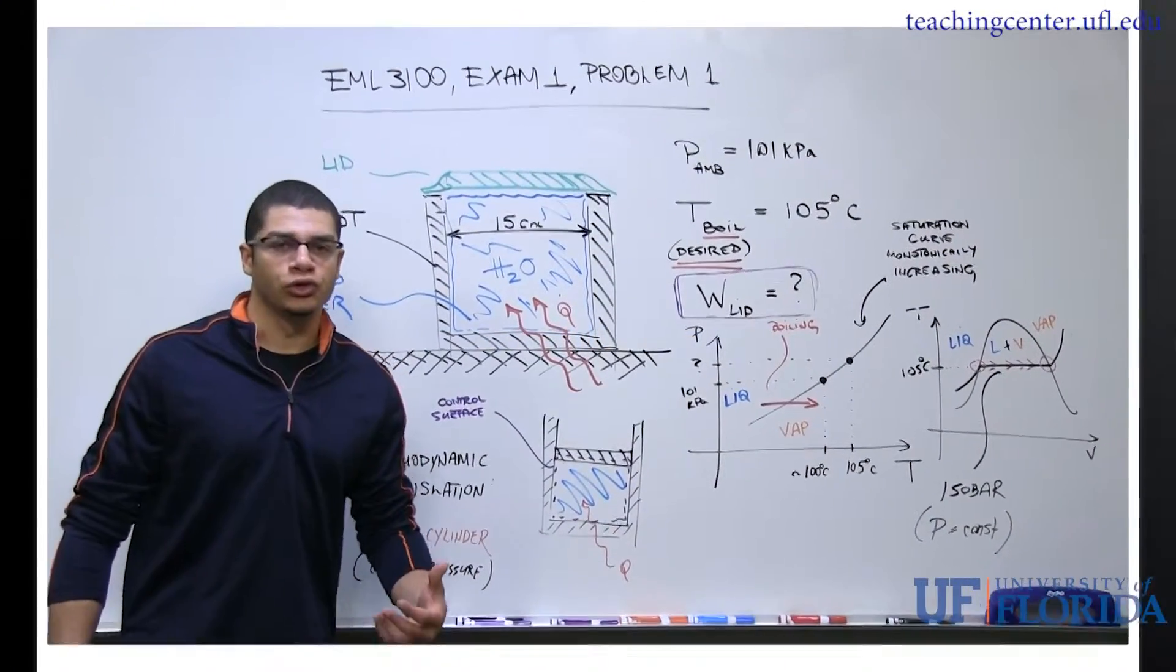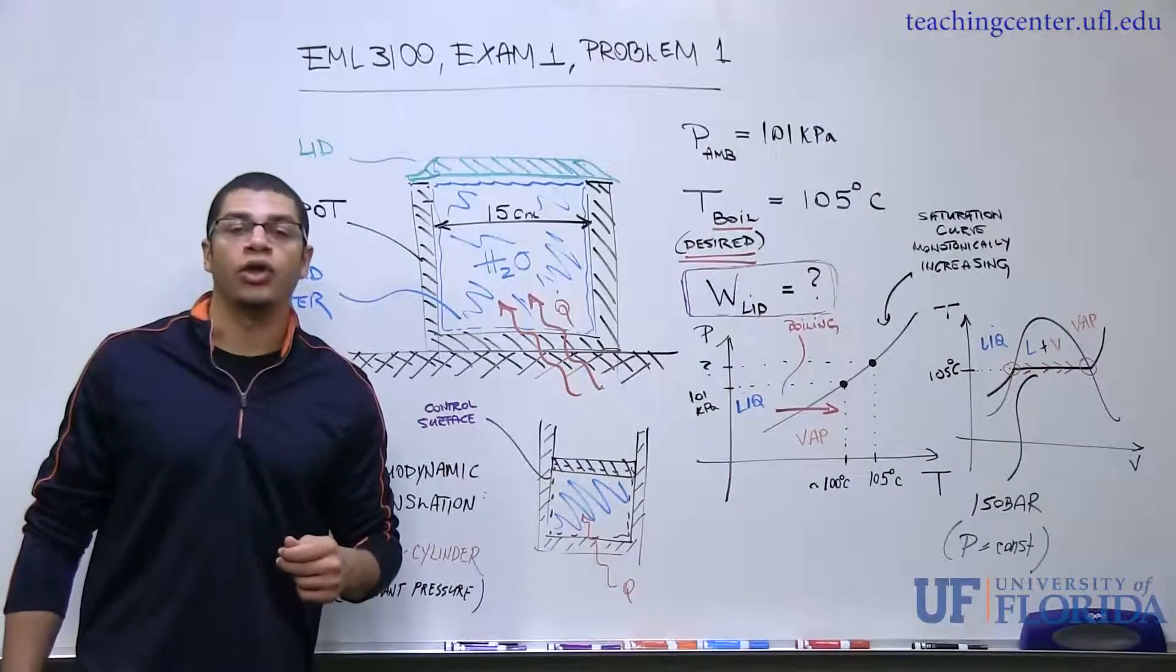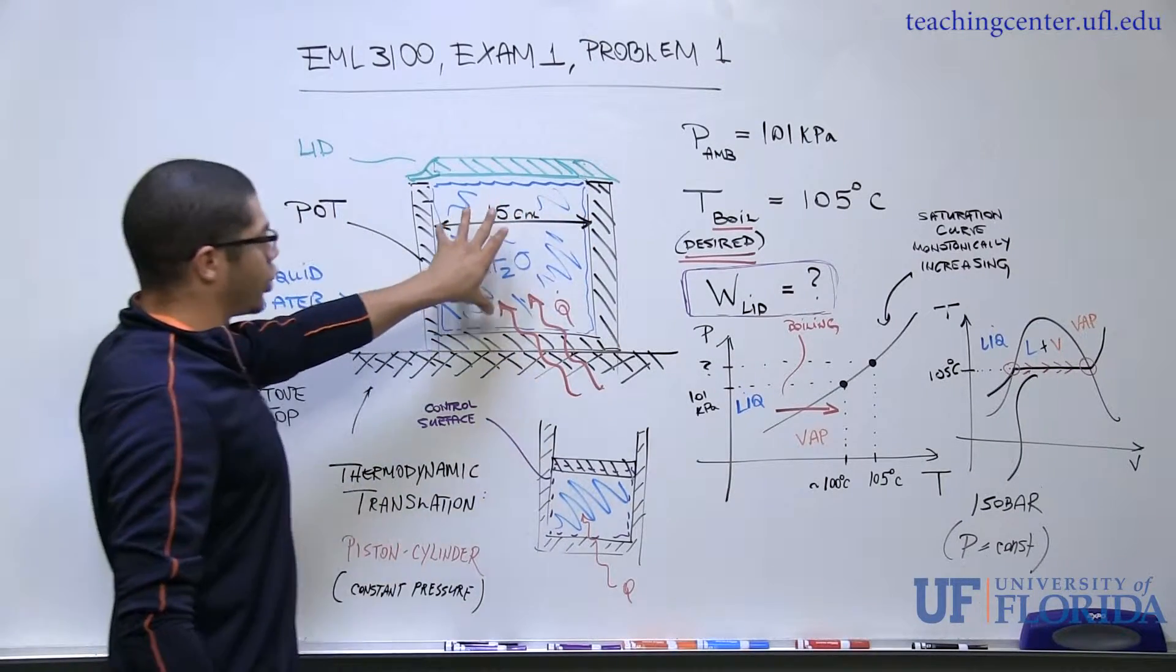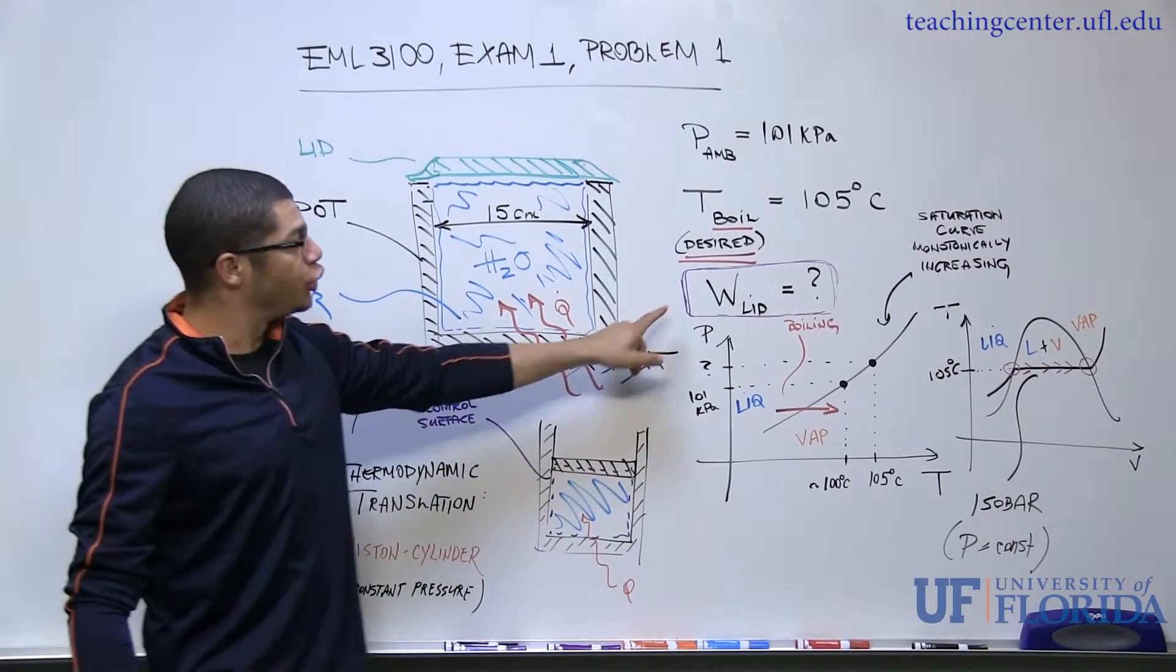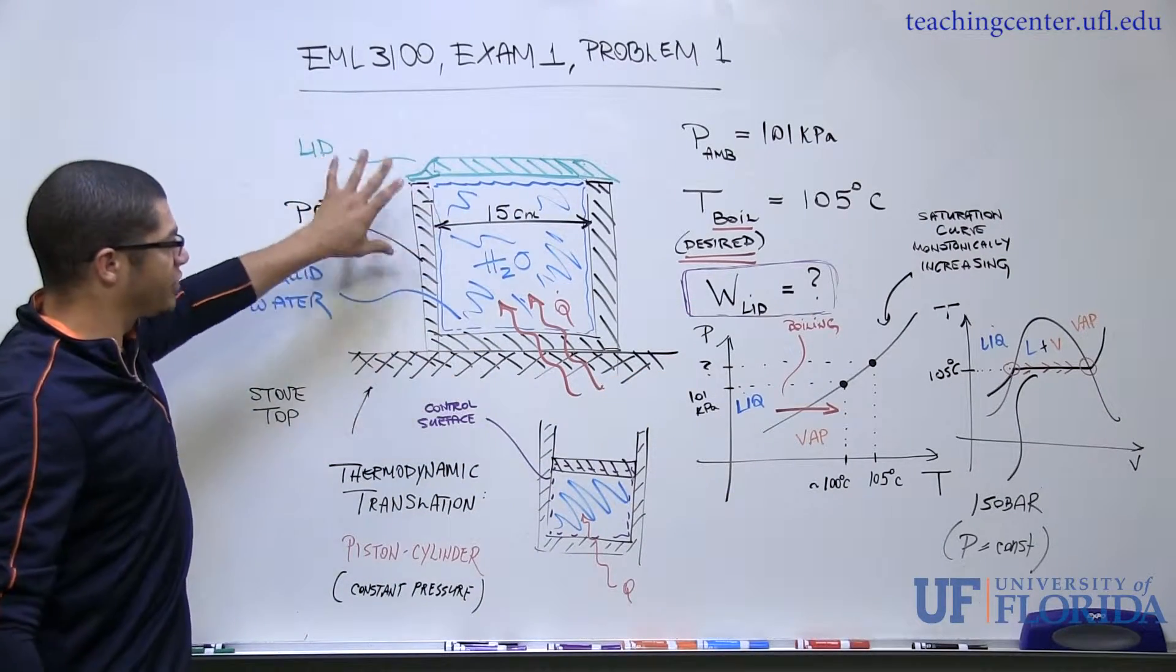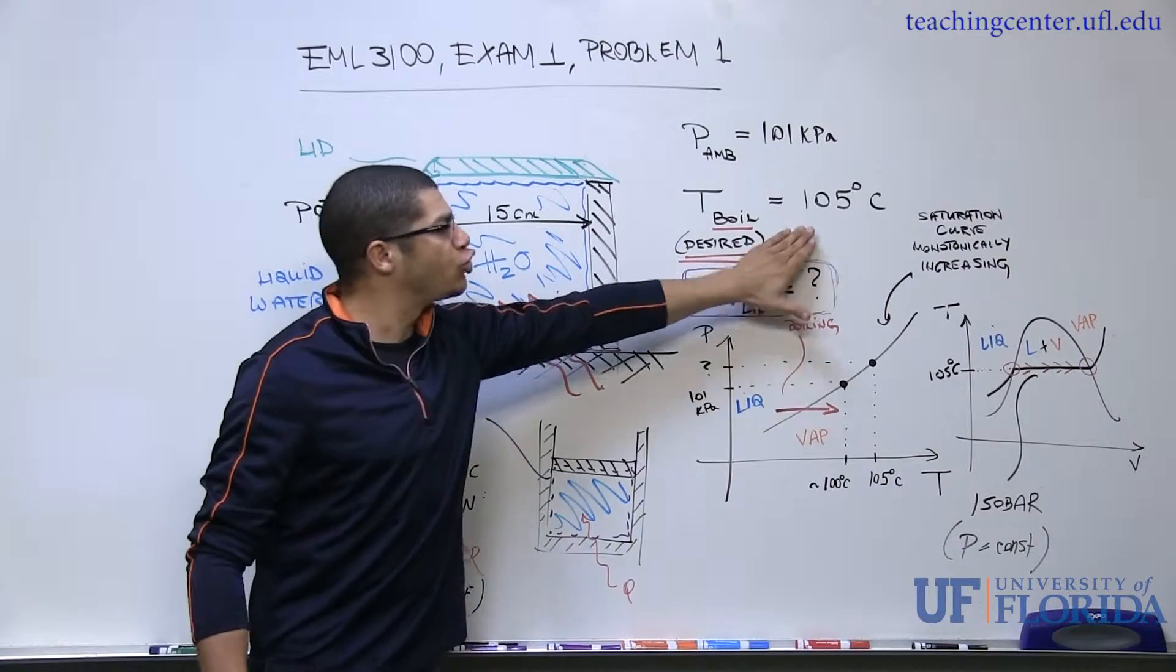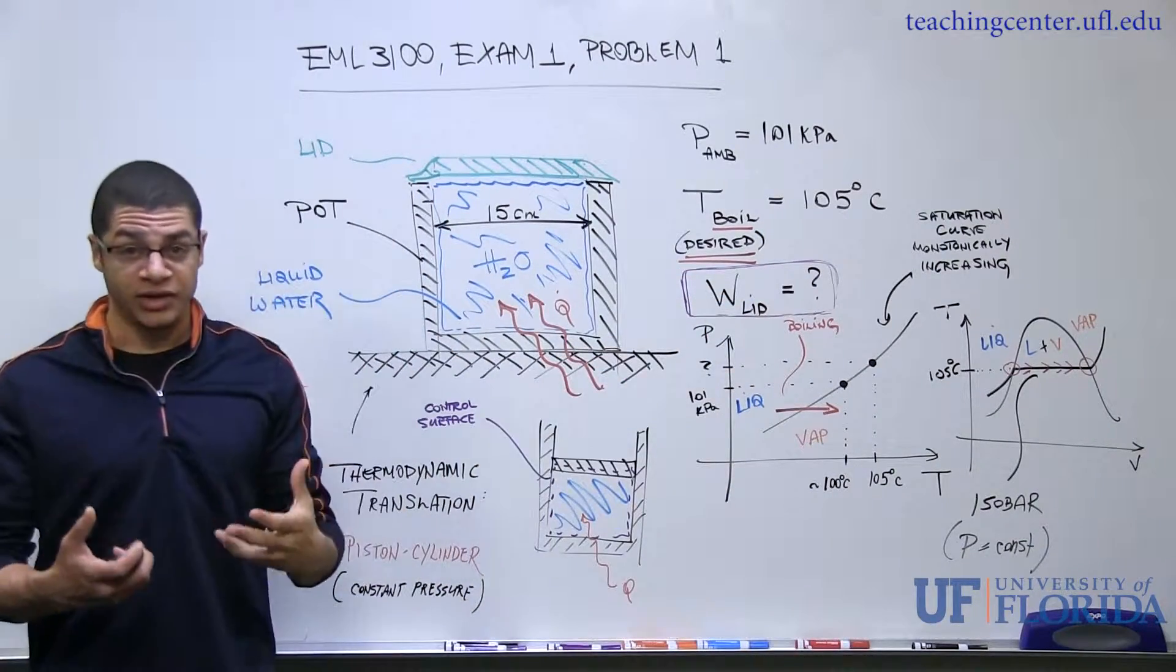I'm going to be going over the problem solution for problem number one on exam one for EML 3100 for the spring 2016 semester. In this problem we're given that we have a pot filled with liquid water, and on top of this pot we have a lid that's been placed on top of unknown weight. The ambient pressure surrounding the entire system here is 101 kilopascals, and ultimately we're asked if we would like the water to boil at 105 degrees centigrade, what does that lid weight need to be?